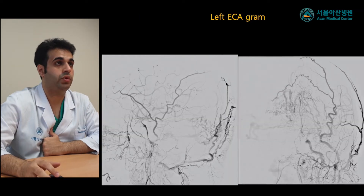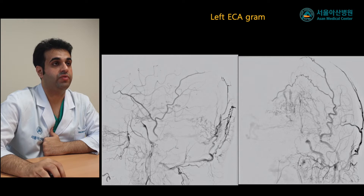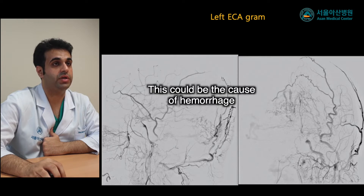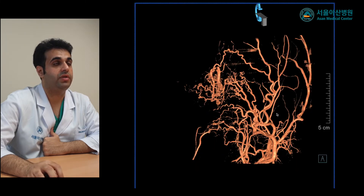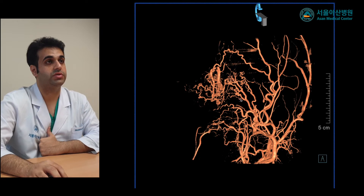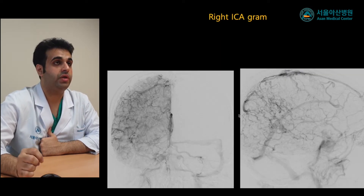After that, we injected the left external carotid artery, which demonstrates a feeder from the transosseous branch of the left occipital artery draining to the torcular region and the posterior superior sagittal sinus. The transosseous branch feeder is actually bilateral, but more prominent on the left side, as demonstrated on the 3D reconstruction image.